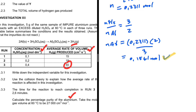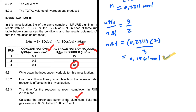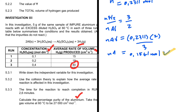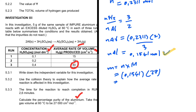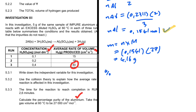Since we have excess sulfuric acid, all the aluminium reacted except for the impurity. To find the mass: moles × molar mass. Number of moles = 0.1541, molar mass of aluminium = 27 g/mol. So mass = 0.1541 × 27 = 4.16 grams of pure aluminium.